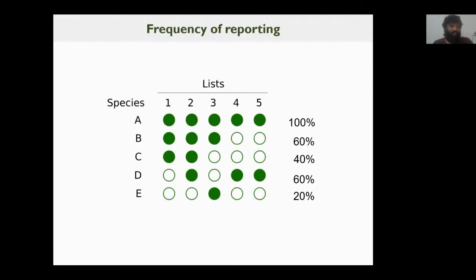Say you have five checklists and five species. Species A was reported in five out of five checklists, which means its frequency of reporting was 100%, whereas Species C was reported in only two out of five checklists, giving a frequency of reporting of 40%. If this frequency of reporting is followed over time, you get some idea of whether the species is increasing, decreasing, or remaining stable.